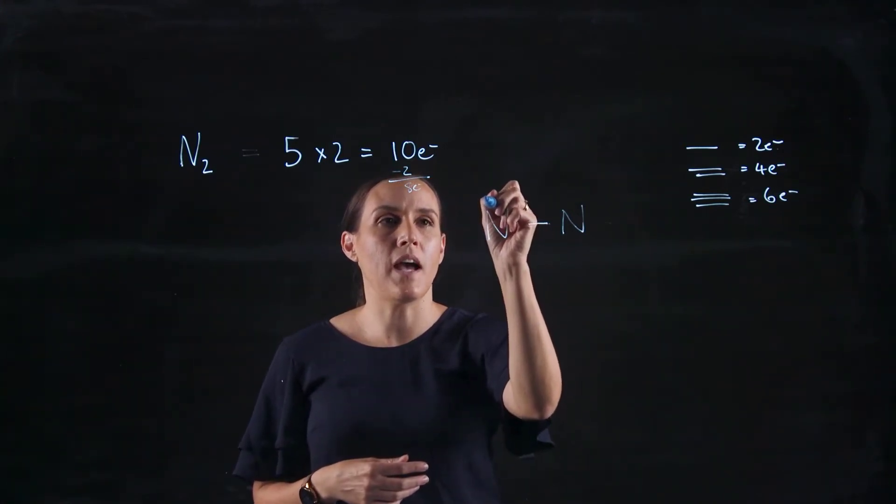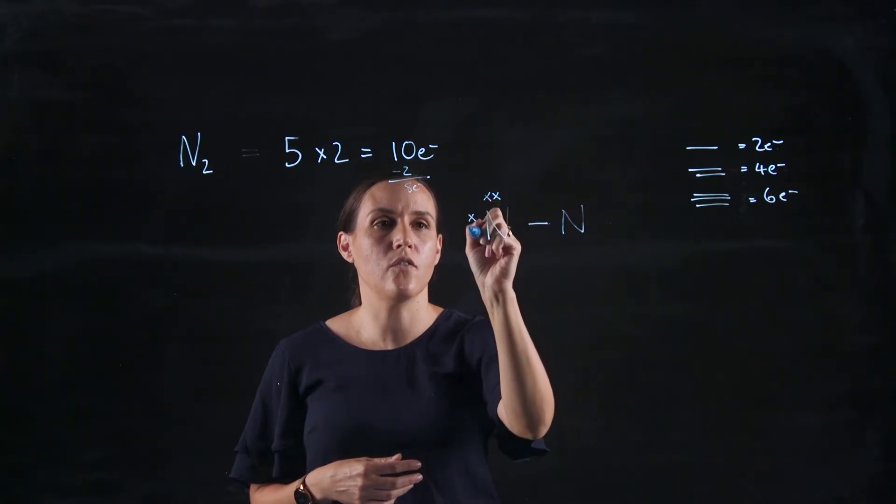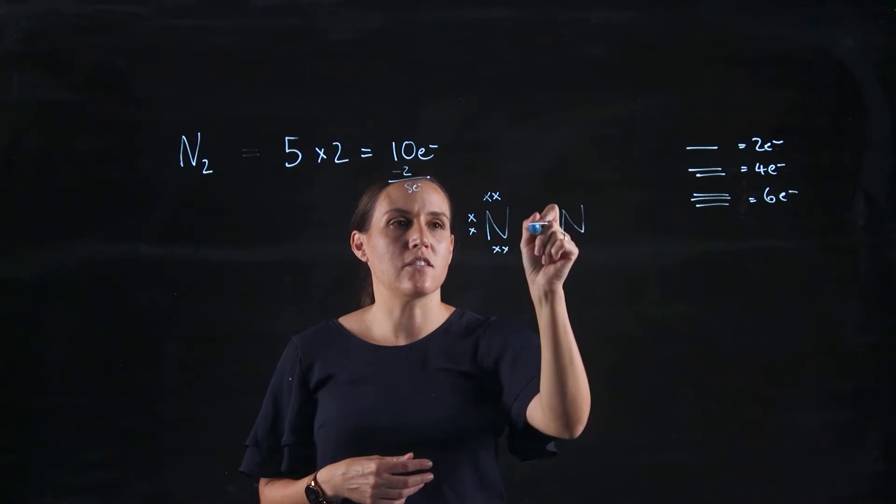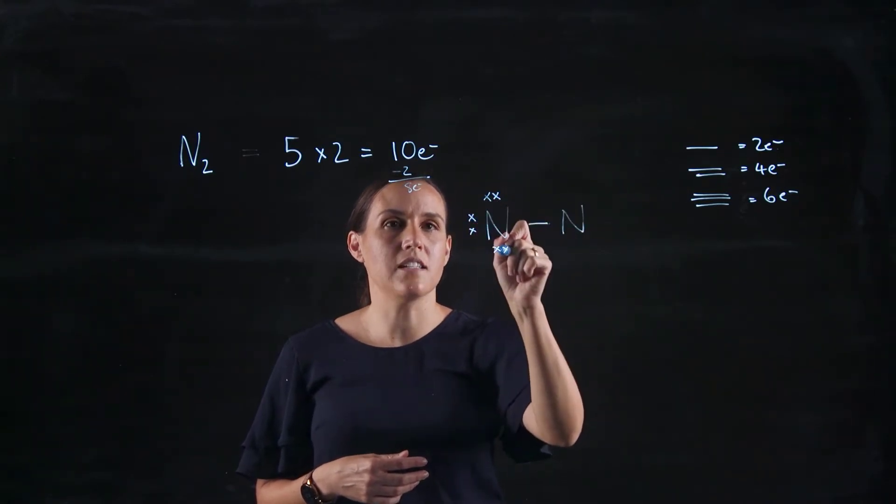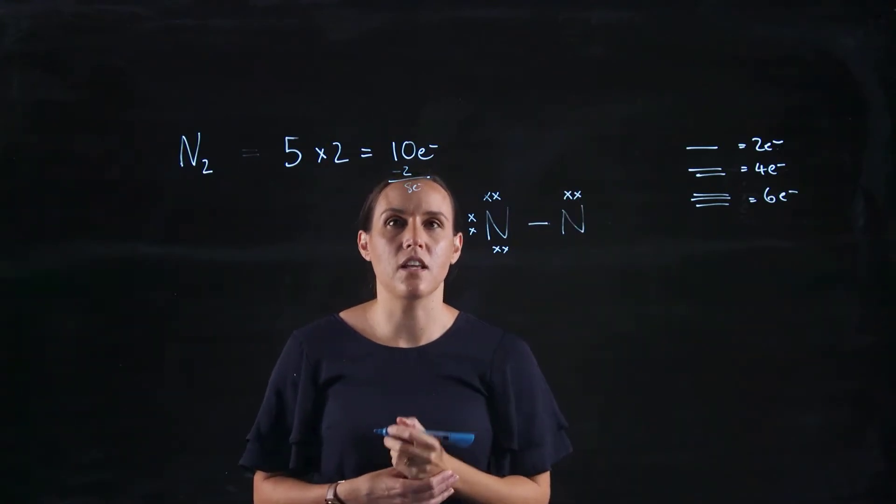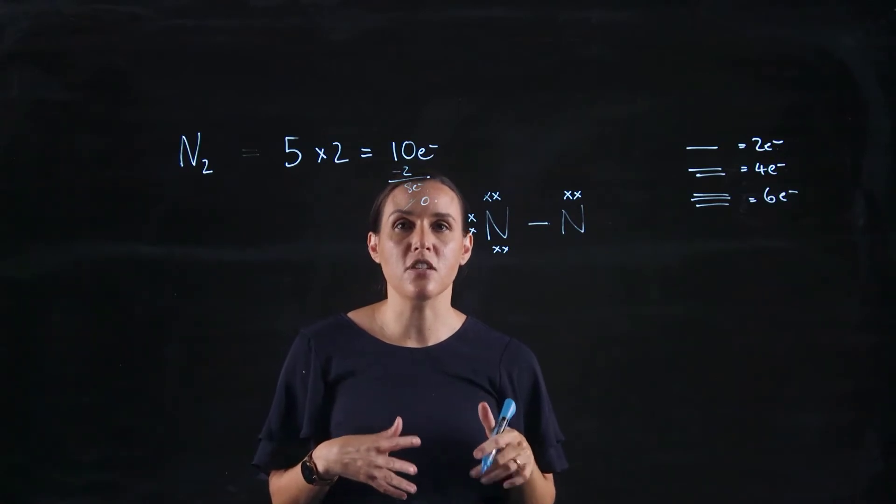So if I put my electrons, I'm going to do crosses so it's really clear for you. So one, two, three, four, five, six. So that's got two, four, six, eight. And then I'll put my last two up on top of that nitrate there. So I've used up all eight of my electrons. I can't add any more to that structure.